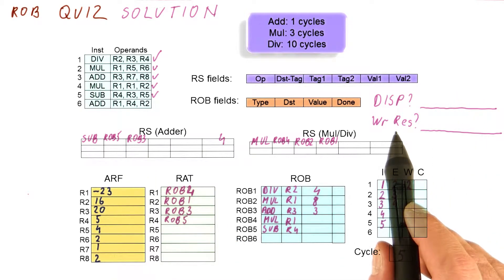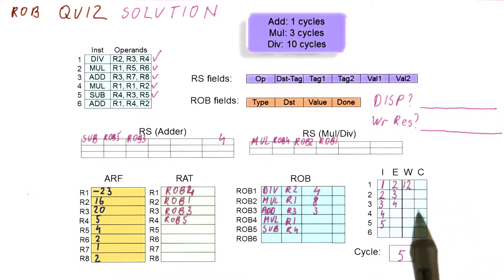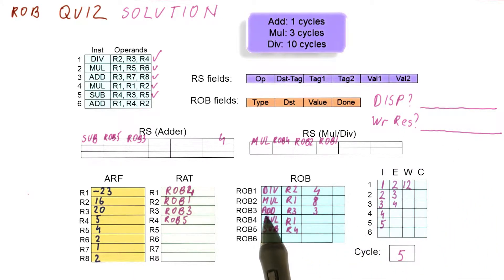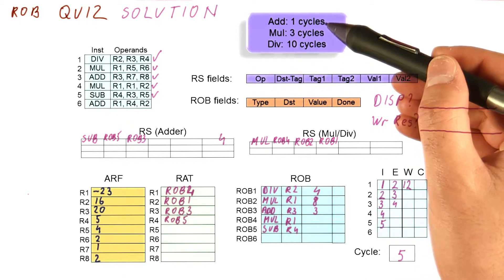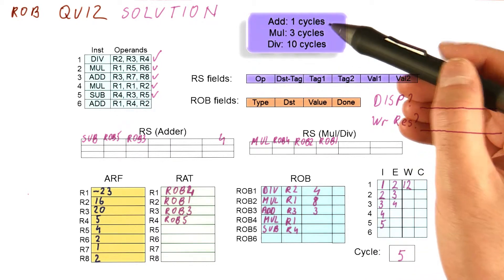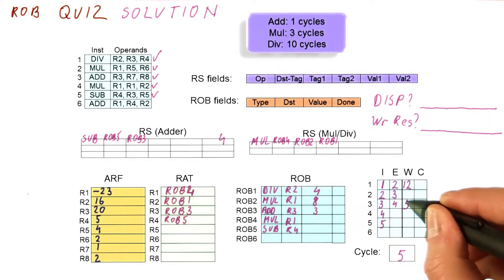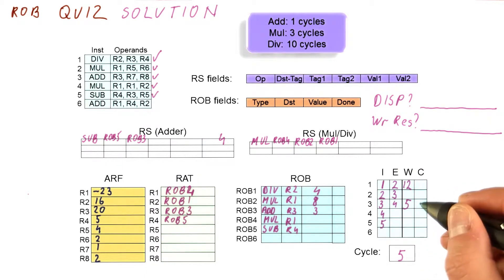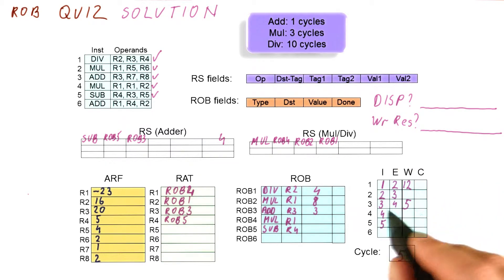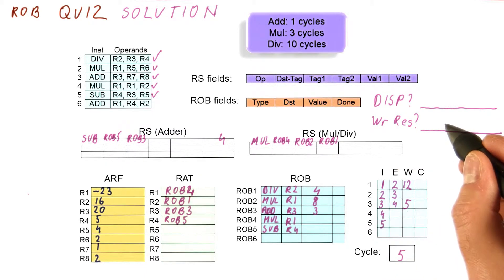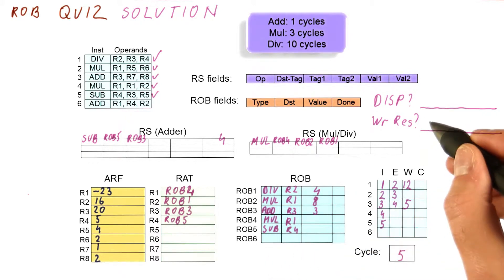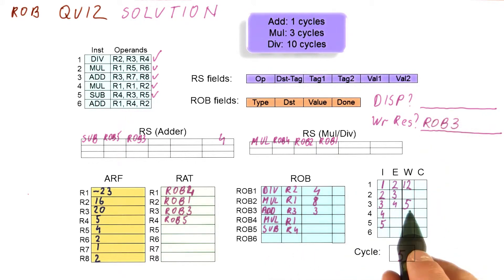Do we write any results? Yes. The instruction in rob3 is an add. It began executing in cycle four, and it takes one cycle to execute. So in cycle five, it will write its result. So the correct answer here is rob3 — this is which instruction writes its result in cycle five.